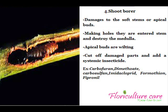Shoot Borer damages soft stems or apical buds. By making holes, they enter the stem and destroy the medulla. Apical buds wilt when they attack, which helps to identify this pest. To control this, cut off the damaged parts and apply a systemic insecticide like Carbofuran, Dimethyloid, Carbosulfan, Imidacloprid, Formethan, or Fipronil.